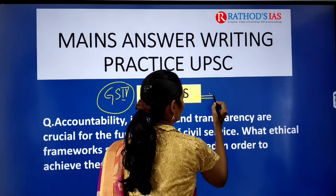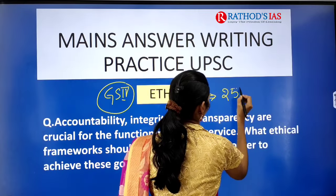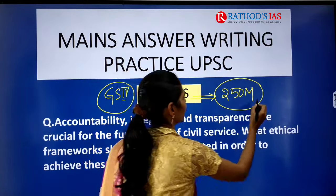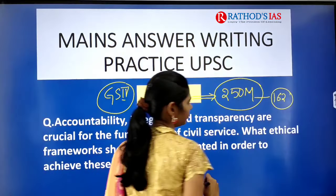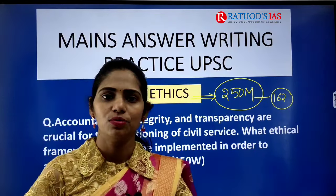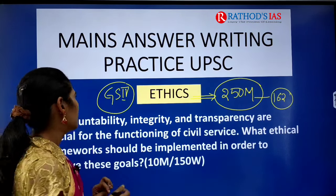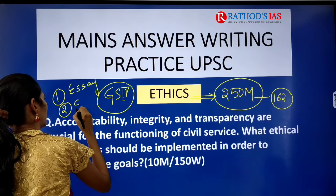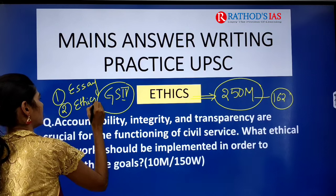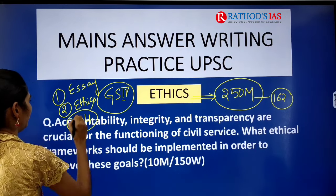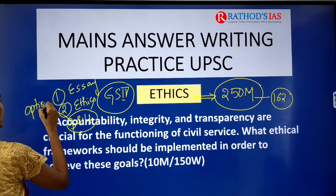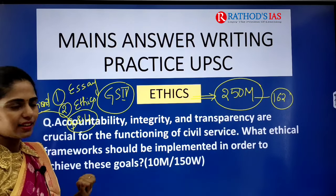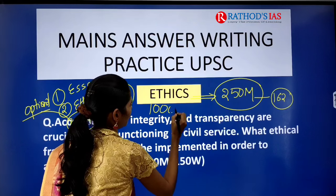Ethics constitutes around 250 marks in GS4. There are four papers which will decide your score: the first is your essay, second is ethics, and third and fourth are your optional papers — paper 1 and paper 2. So essay, ethics, and optional together constitute around 1000 marks.